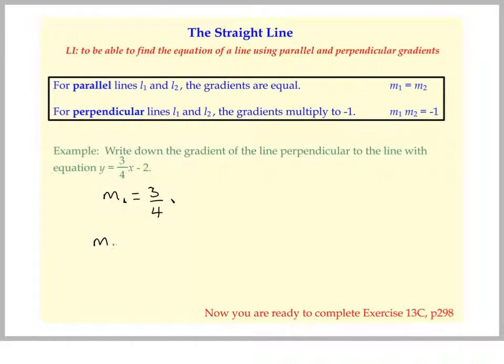We know m1 m2 equals minus 1, therefore, and that's what we have to write, m1 m2 equals minus 1. Therefore, m2 equals minus 4 over 3. That's the new gradient or the perpendicular gradient.